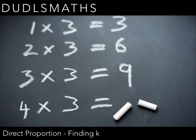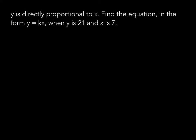In this video, we're going to have a look at direct proportion and when we're asked to find a value for k. This is your typical question. It'll say something like: y is directly proportional to x, find the equation in the form y equals k times x, when y is 21 and x is 7.